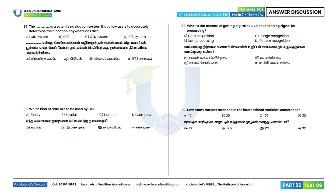Question 87: A satellite navigation system that allows users to accurately determine their location anywhere on Earth — the answer is GPS system. Option A. Question 88: Which kind of data is used by GIS? Spatial data is used. Option B is the correct answer.